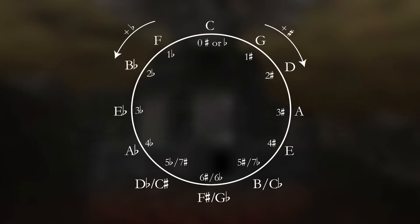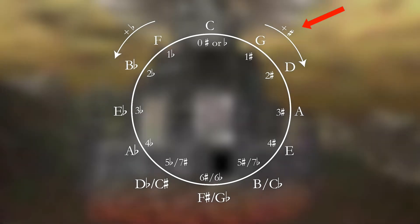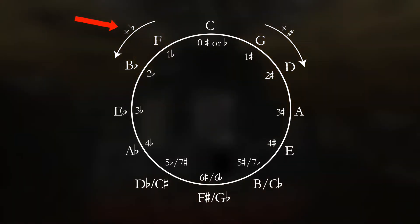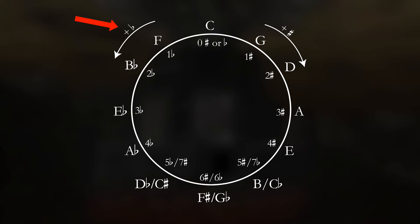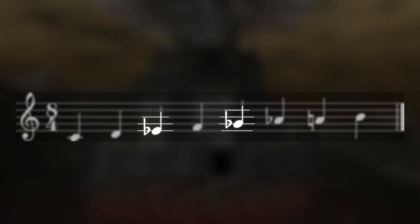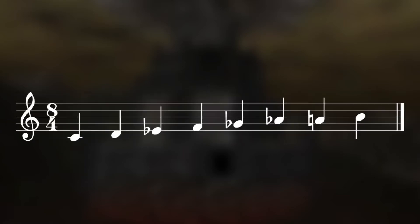As a general rule, the more sharps you have, the brighter the sound, and the more flats you have, the darker the sound. Since the diminished scale flattens two very strong chord tones that normally bring stability — the third and the fifth — it's decidedly darker than any minor scale.